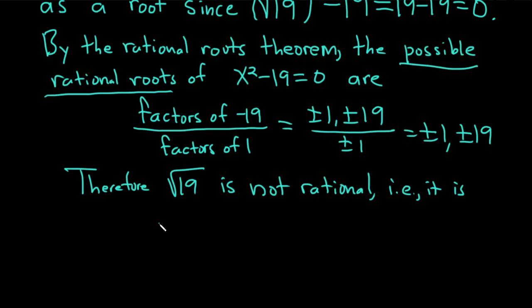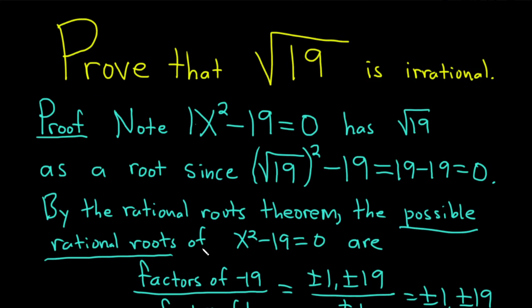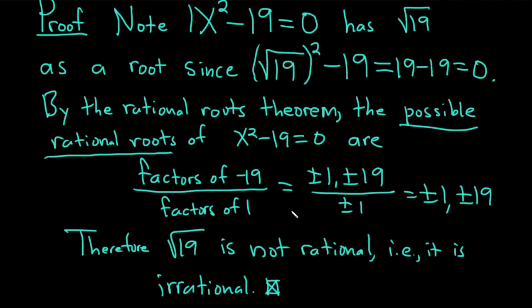So kind of an interesting approach to prove that a number is irrational, right? So you can try to use the rational roots theorem. If you have another way of doing this, another solution, leave a comment. Good luck.